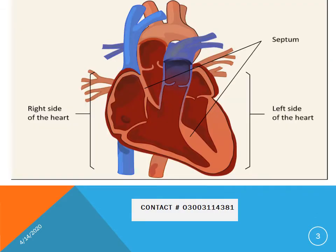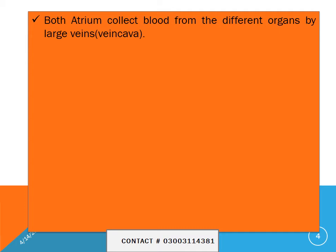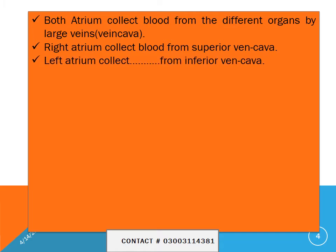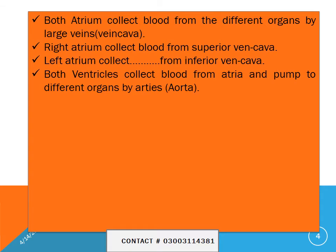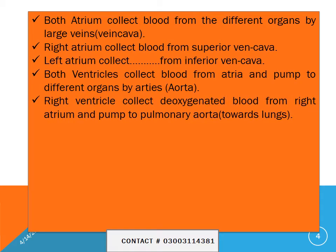As you can see, this is the heart — one is the right side and another is the left side. In between the atria and ventricles, there is a septum. The septum is a partition between the atria and the two ventricles. Both atria collect blood from different organs by large veins known as the vena cava. The right atrium collects blood from the superior vena cava, and the left atrium collects blood from the inferior vena cava. Both ventricles collect blood from the atria and pump to different organs by arteries.